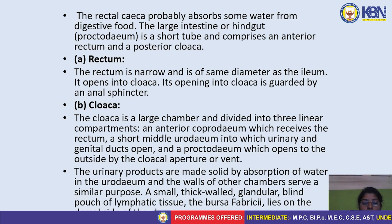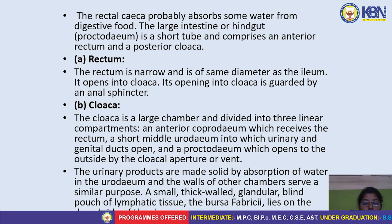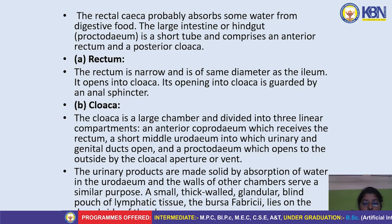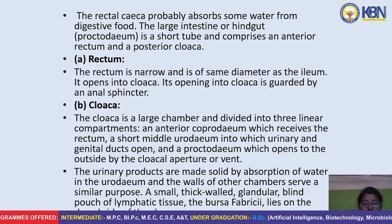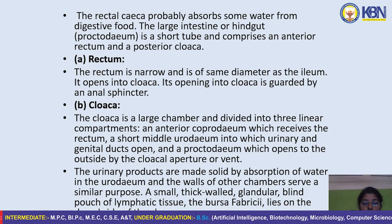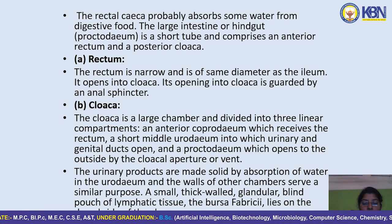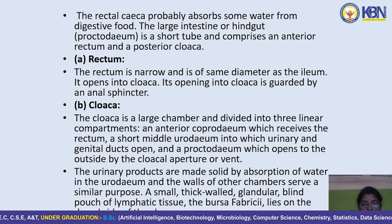The urinary products are made solid by absorption of water in the urodeum. A small, thick-walled, glandular blind pouch of lymphatic tissue called the bursa of Fabricius lies on the dorsal side of the cloaca.